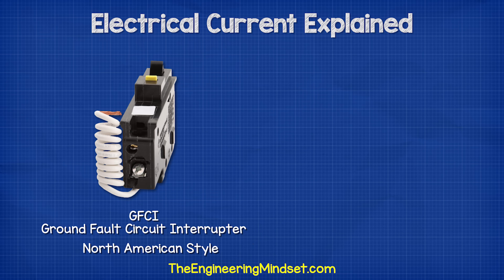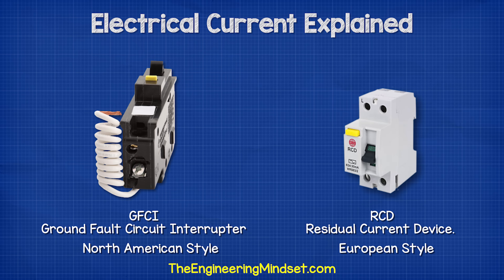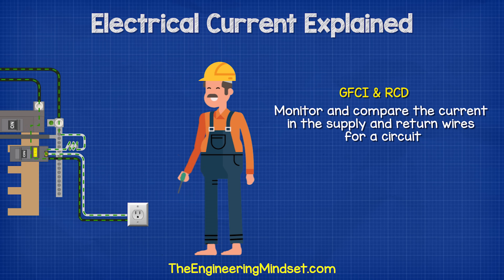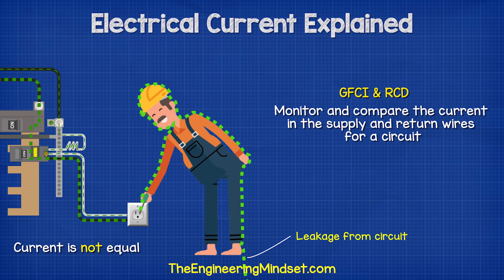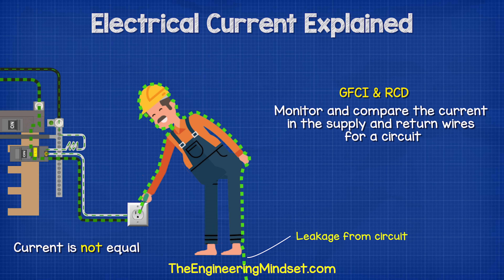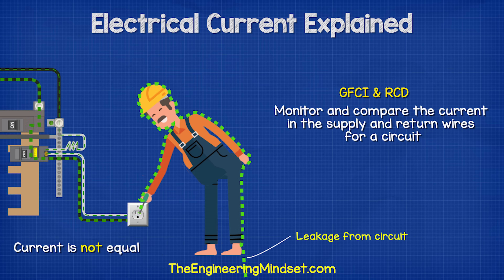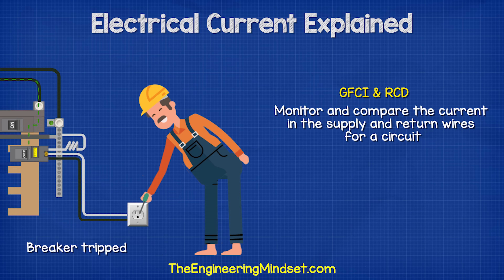In North America, we find another device called a GFCI, or a ground fault circuit interrupter. In Europe, this is called an RCD, or a residual current device. These basically monitor and compare the current in the supply and return wires to a circuit. If the current coming back is not equal to the current being supplied, then the electricity has found another path and is leaving the circuit — it could be passing through a person, so the device cuts the power. This happens extremely fast and with a very small tolerance to help protect against electric shocks and keep us safe.